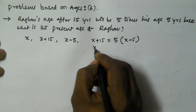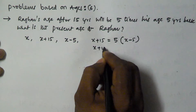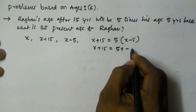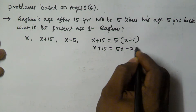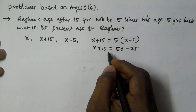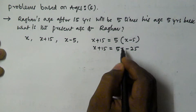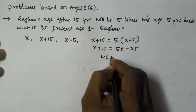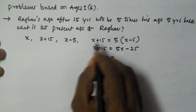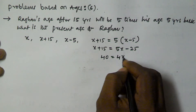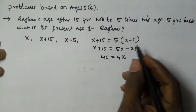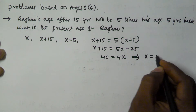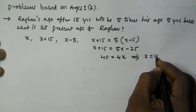So this gives us x plus 15 is equal to 5x minus 25. Moving terms across, this becomes 40 on one side and 4x on the other. So that means x is equal to 10.